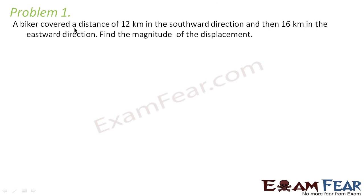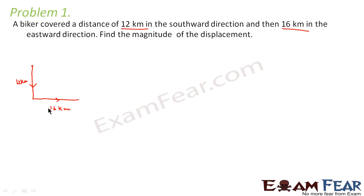The first problem says that a biker covered a distance of 12 kilometers in the southward direction and then 16 kilometers in the eastward direction. Find the magnitude of the displacement. Let us suppose this is the biker. He covered 12 kilometers southward, then traveled 16 kilometers eastward. He started at point O, went to point A, and finally reached point B. Displacement is the straight line path or shortest distance between the initial and final point.